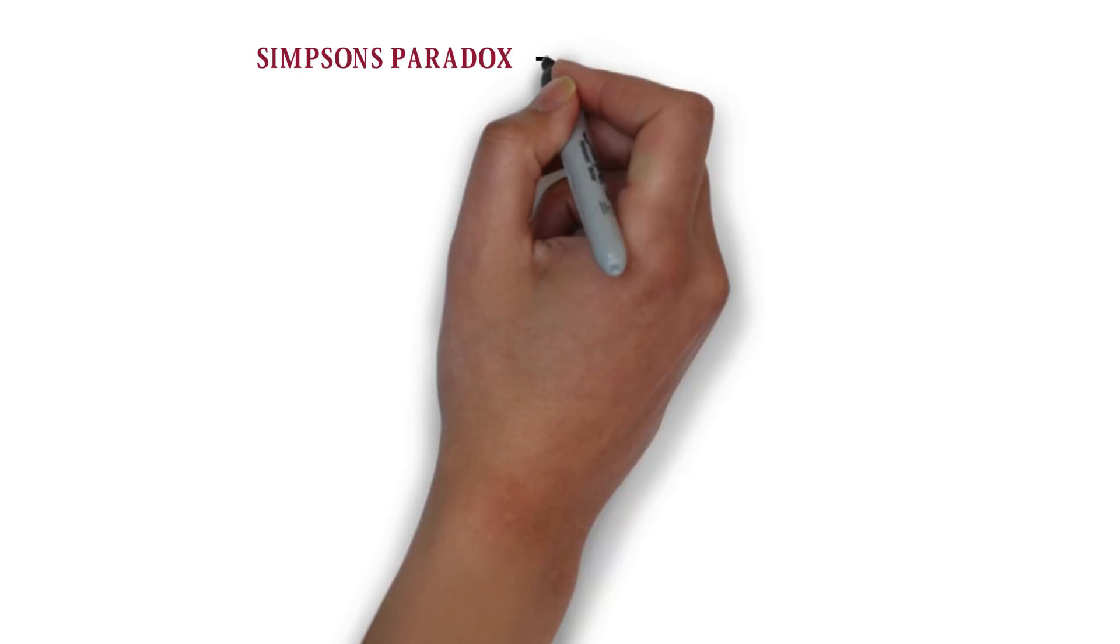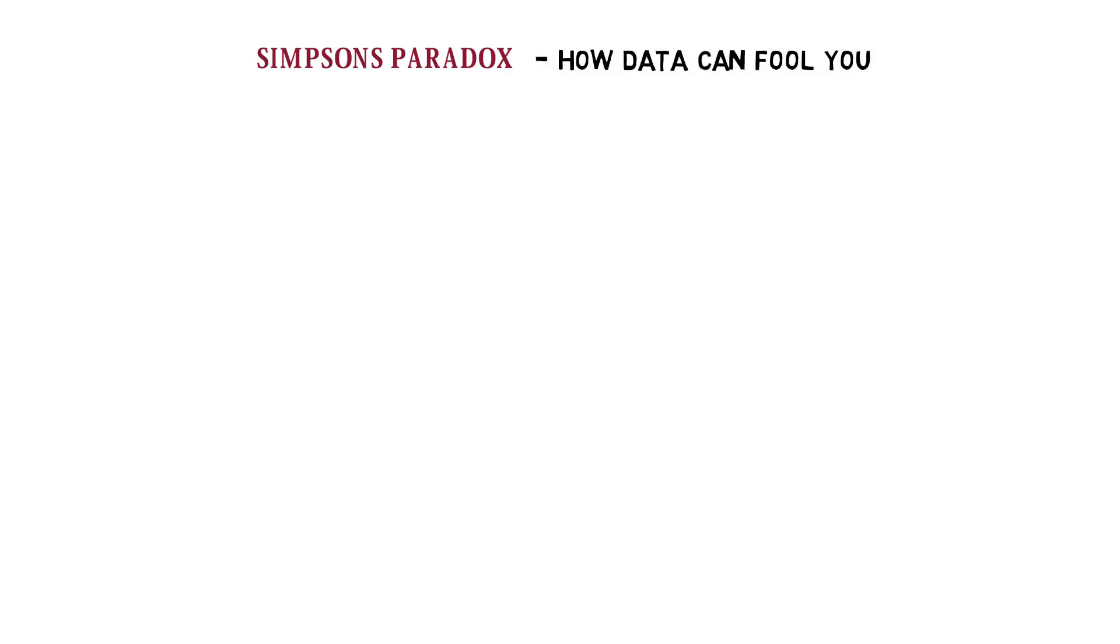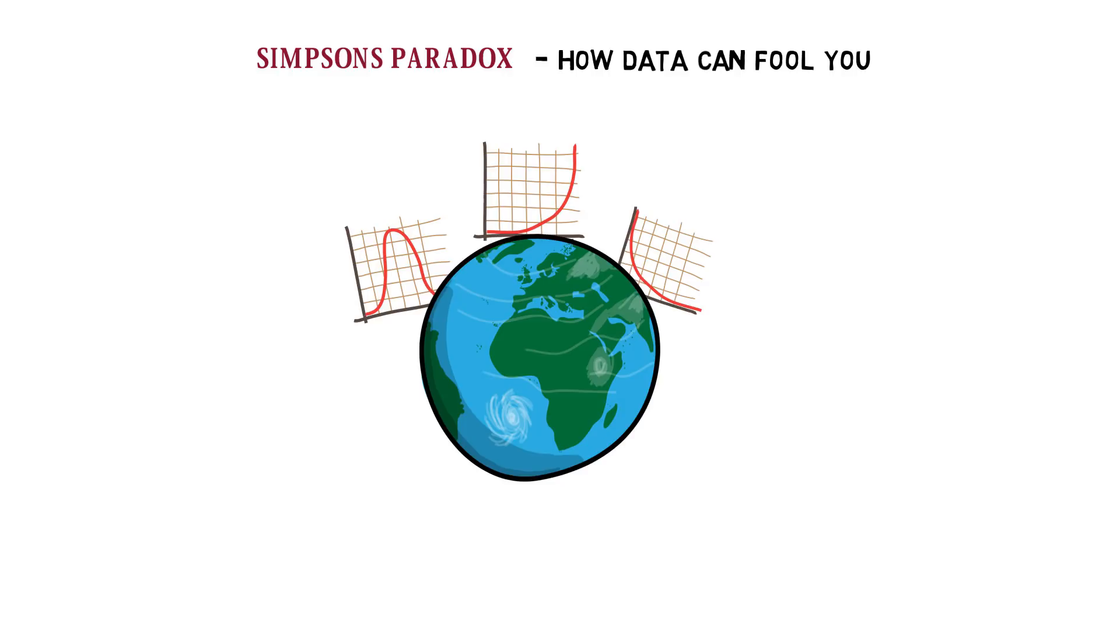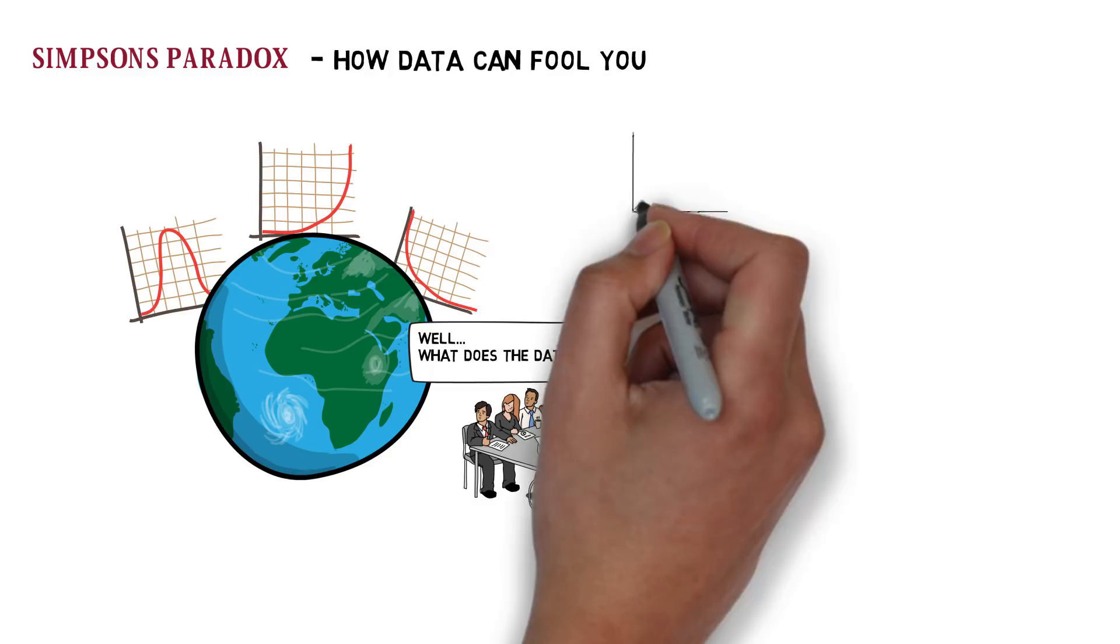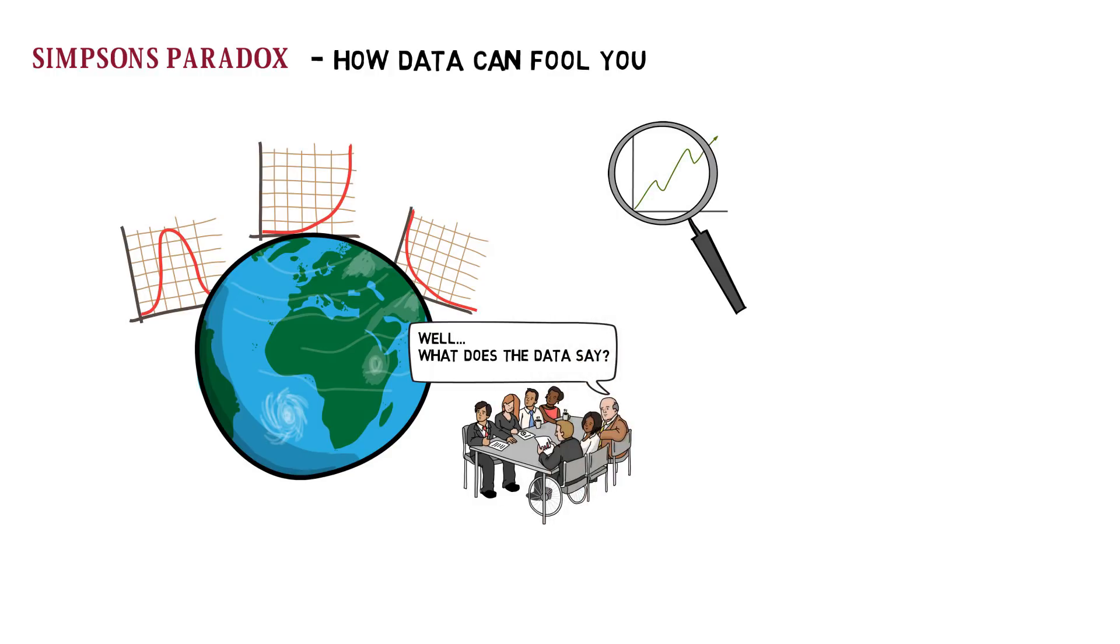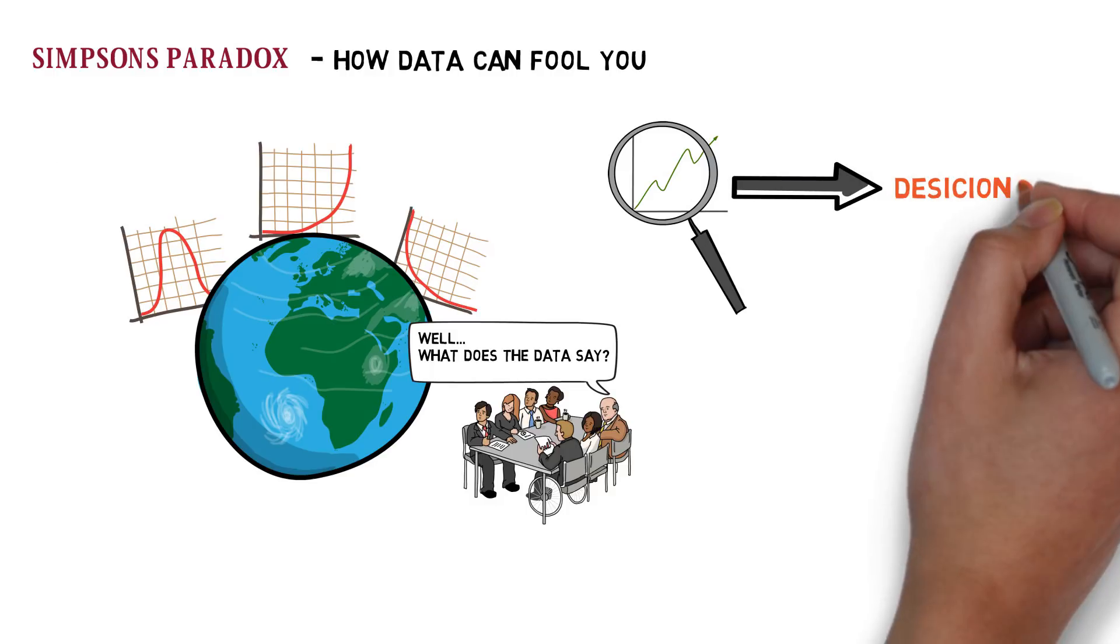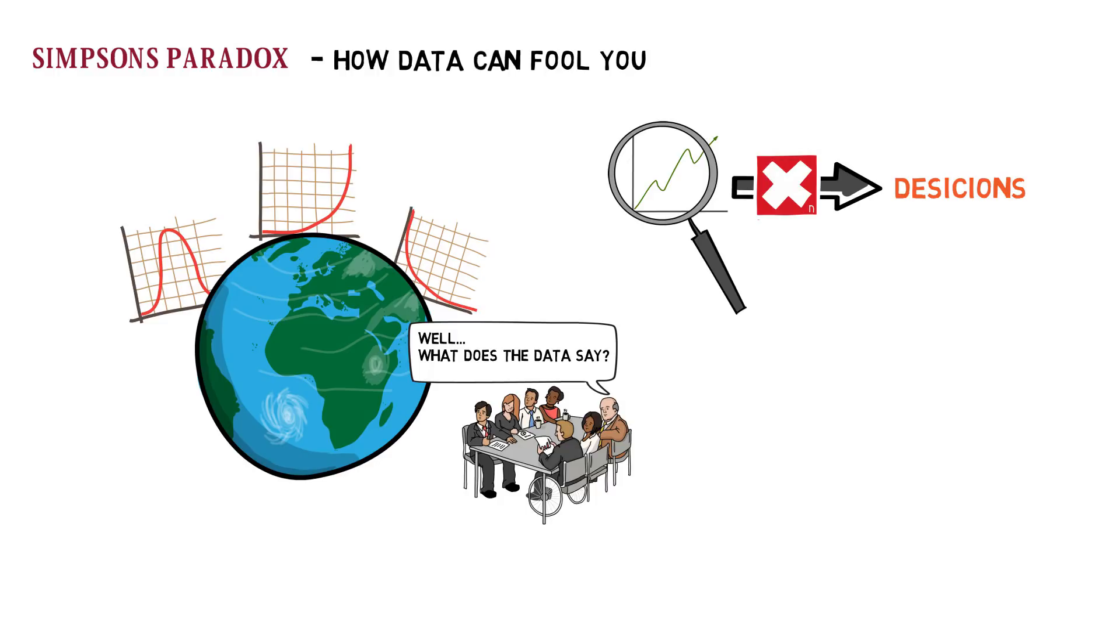Simpson's Paradox: how data can fool you. We are increasingly becoming a society obsessed with data. Important decision-making meetings will often parrot the phrase, 'Well, what does the data say?' Being data-informed is all well and good, but using it at face value to drive decision-making can be rather dangerous. In this video we will discuss one of the ways data can trick you into making the wrong decision.